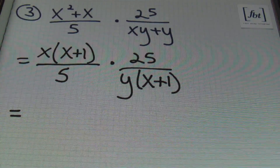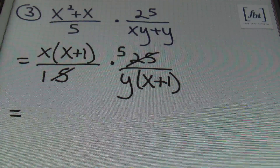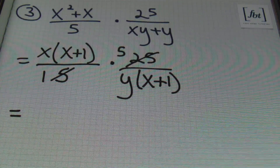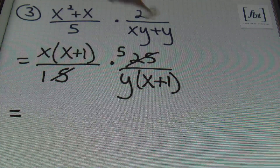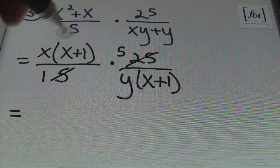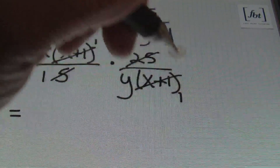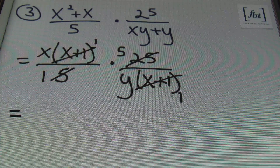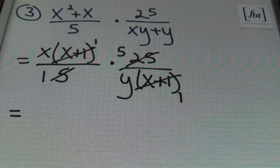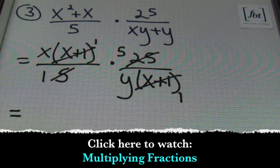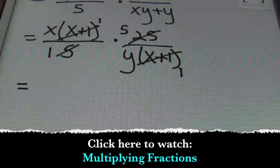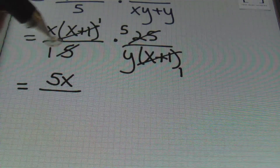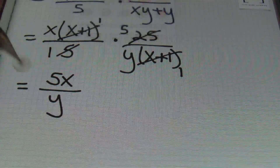5 goes into itself once, and 5 goes into 25 five times. Notice that the factor of x plus 1 is in the numerator and in the denominator. You can simplify vertically or diagonally, but never horizontally. x plus 1 goes into itself once; x plus 1 goes into itself once. Multiplying straight across, because at the end of the day this is just a fraction, I get x times 5 which gives me 5x in the numerator, and 1 times y is just y in the denominator. So the answer is 5x over y.